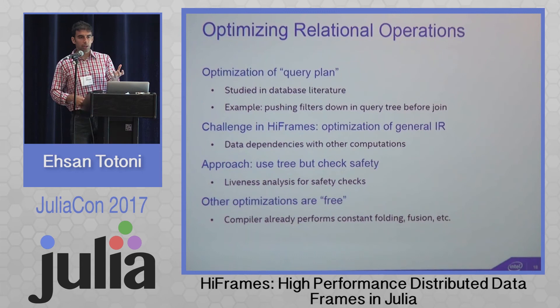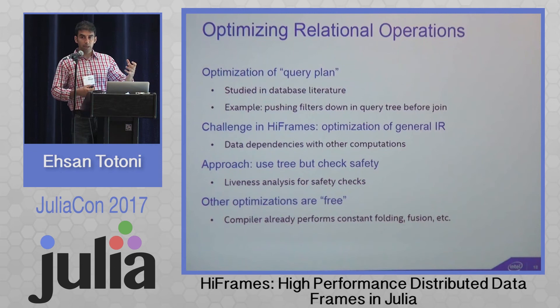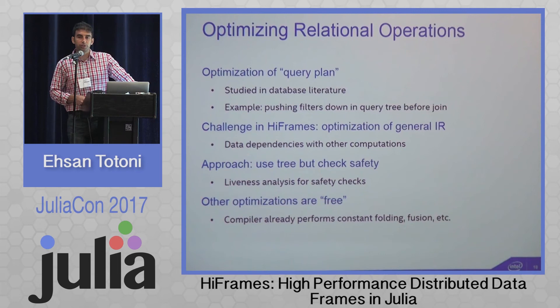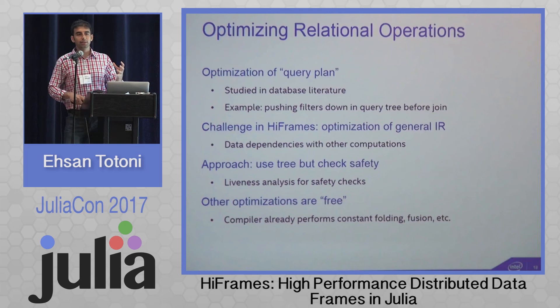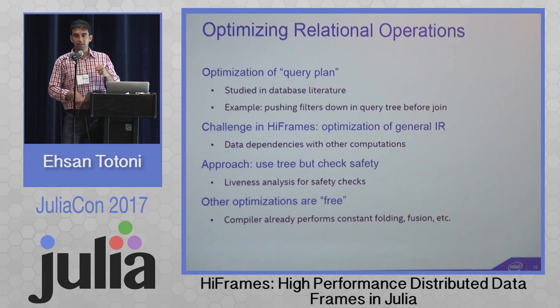Relational optimizations — well-known in database literature — can also be applied. For example, if joining two large tables and then filtering the output, filtering the inputs first (if dependencies allow) makes the join faster due to smaller input sizes. This is called filter pushdown. The challenge for HiFrames is performing relational optimizations in a general IR that also contains computation. Our approach: create a query tree of relational relationships, optimize greedily, then check dependencies before applying transformations.